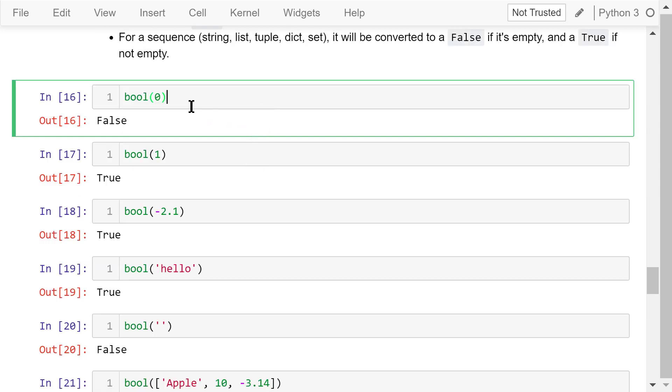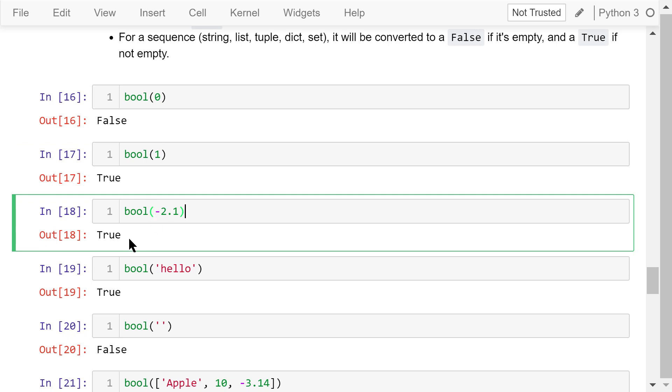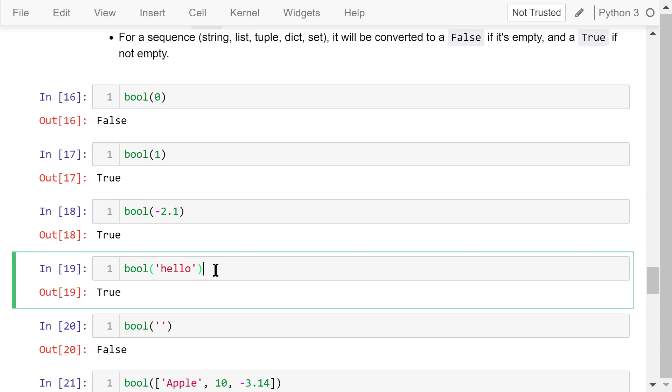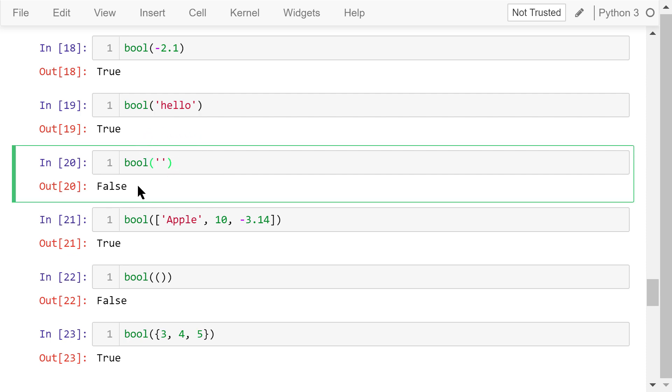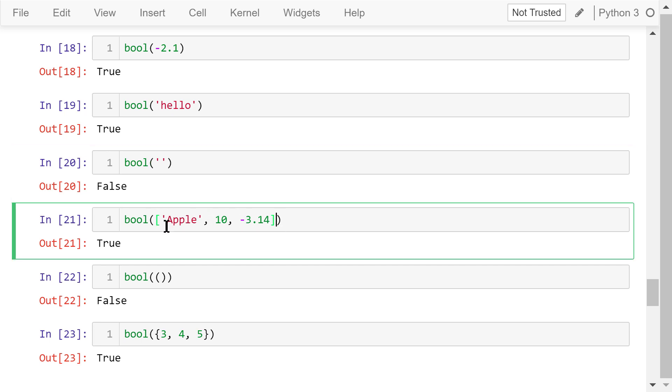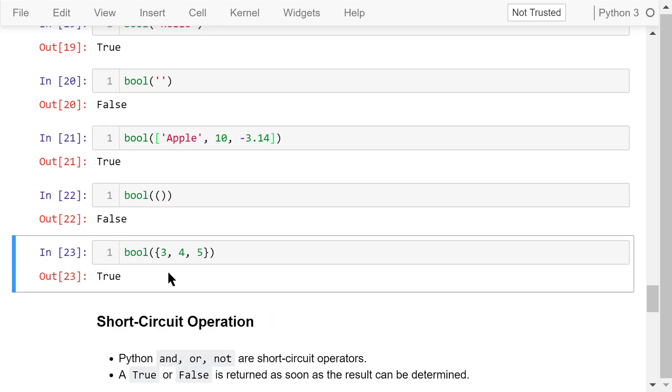Let's see some examples. The number 0 will be converted to false. The number 1 will be converted to true. Negative 2.1 is not 0, so it will be converted to true. A string hello is not empty, so it will be converted to true. This is an empty string, so it will be converted to false. This list is not empty, so it will be converted to true. This is an empty tuple, so it will be converted to false. This set is not empty, so it will be converted to true.